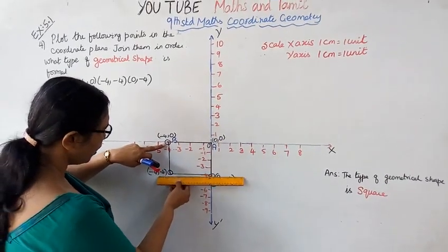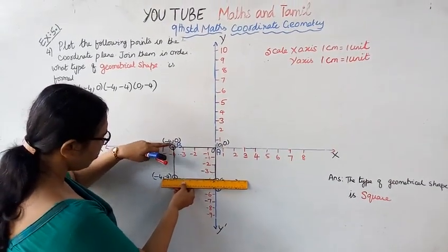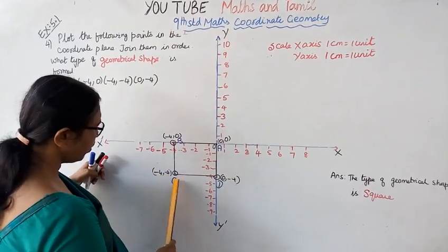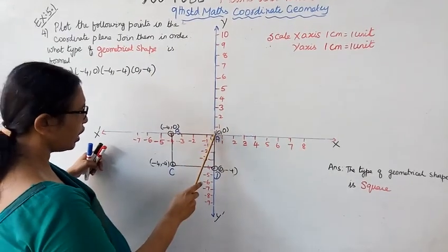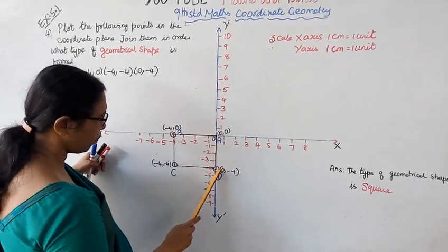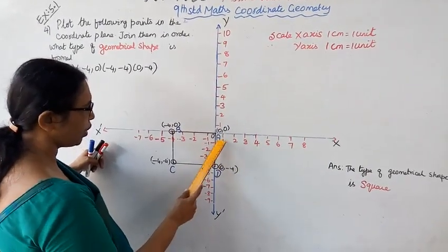Then (-4,-4). Now this is (-4,-4). And (0,-4).